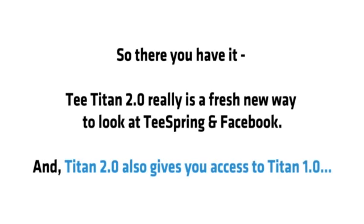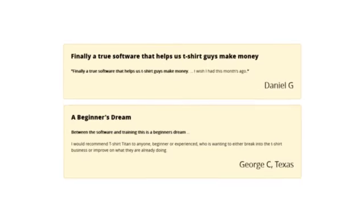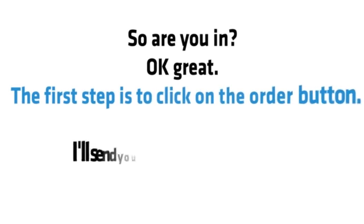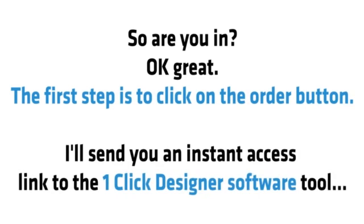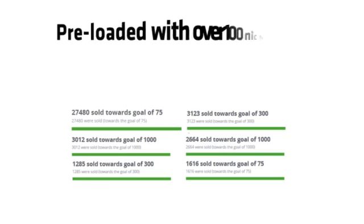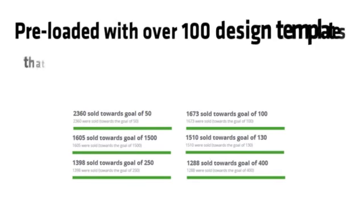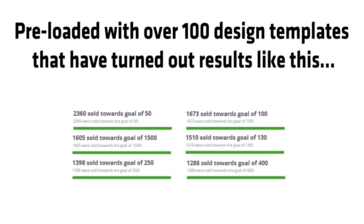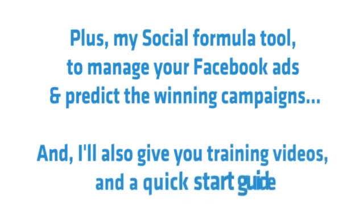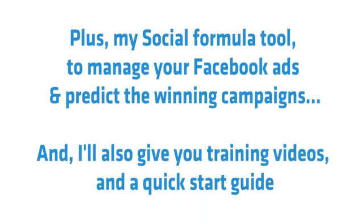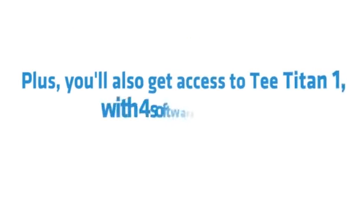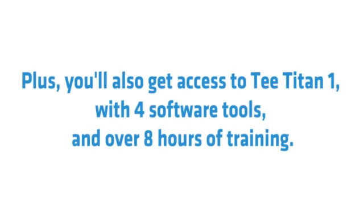T-Titan 2.0 really is a fresh new way to look at Teespring on Facebook. Titan 2.0 also gives you access to Titan 1 so you can get results like this. The first step is to click on the order button. I'll send you an instant access link to the one-click designer software tool, preloaded with over 100 niches that have proven to make sales, preloaded with over 100 design templates that have turned out results, plus my social formula tool to manage your Facebook ads and predict the winning campaigns. I'll also give you training videos and a quick start guide that walks you through my complete approach in one simple PDF document. Plus, you'll also get access to T-Titan 1 with four software tools and over eight hours of training. The number one package for the number one online opportunity just got two times better.